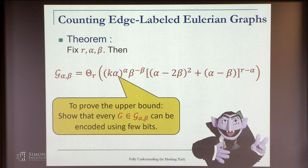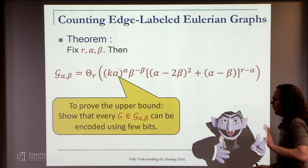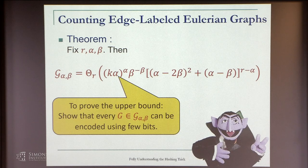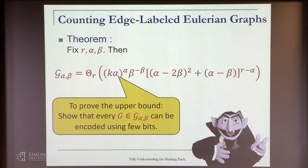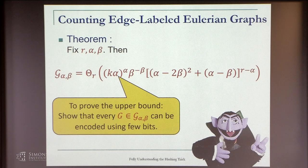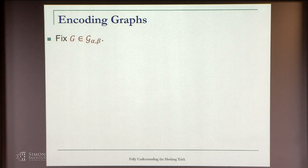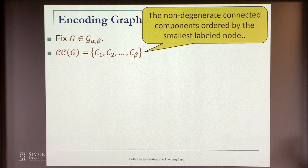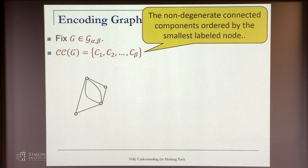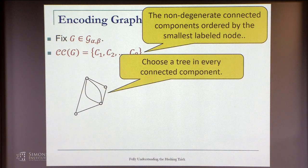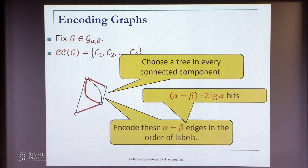To prove the upper bound, we show that every graph in this family can be encoded using few bits. Let's quickly see the idea. Fix some graph and let these be the non-degenerate connected components. Take one connected component. For each connected component, we choose arbitrarily a tree in that connected component.